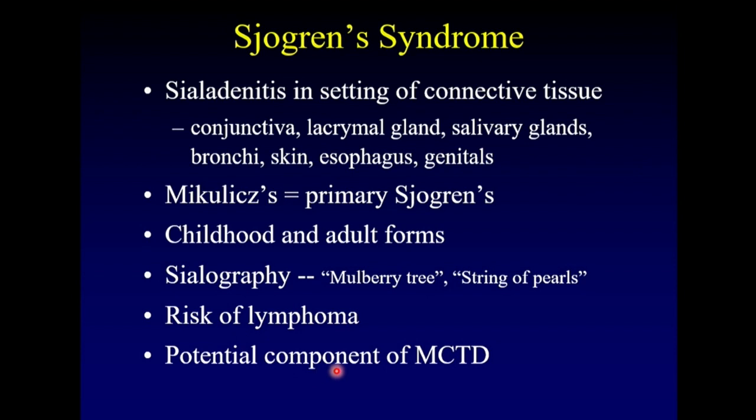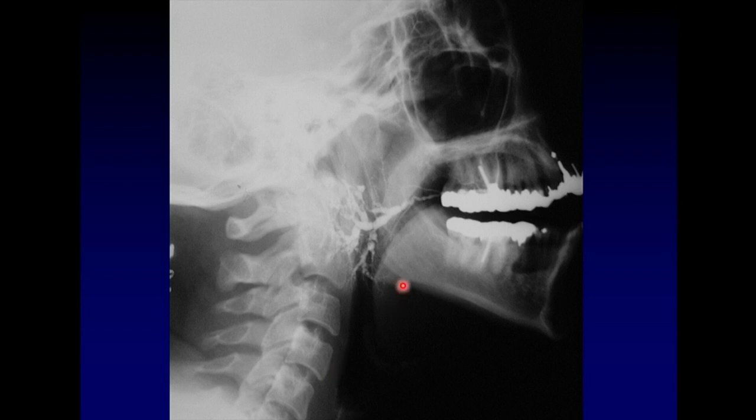Sjögren's syndrome is potentially part of mixed connective tissue disease. The string-of-pearls sign shows areas of dilatation interspersed with areas of strictures throughout the intraglandular and extraglandular segments of the duct — a classic appearance for any type of chronic sialadenitis, in this case the result of Sjögren's disease.